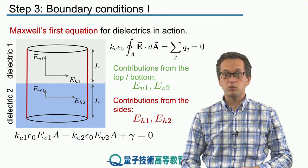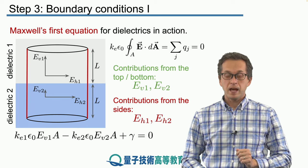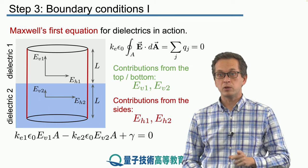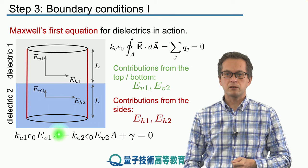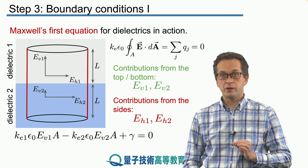Minus Ke2 times epsilon naught times eV2 times A, and then we have to add the contributions through the sides coming from eH1 and eH2, which I will just describe as some term gamma. And this whole sum has to be equal to zero.